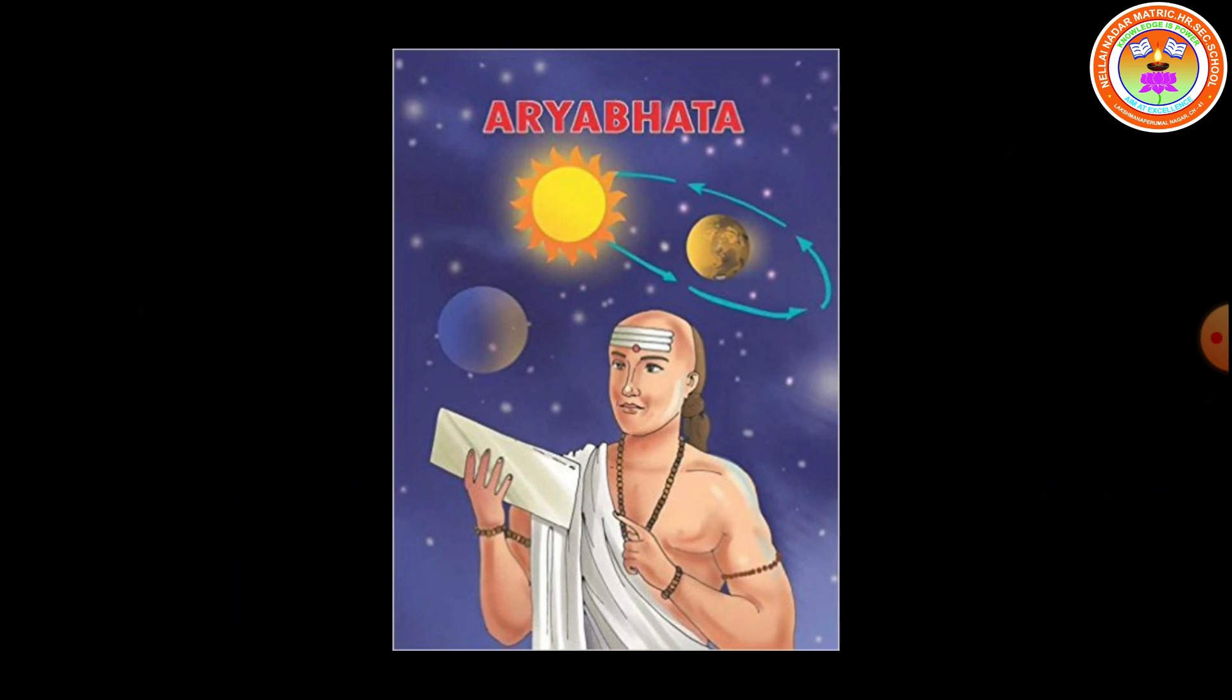Thus, the geocentric model, also known as geocentrism, is a description of the universe with a spherical and spinning Earth at the center. The moon, sun, stars, and planets all orbit the Earth. This model emerged in various cultures.